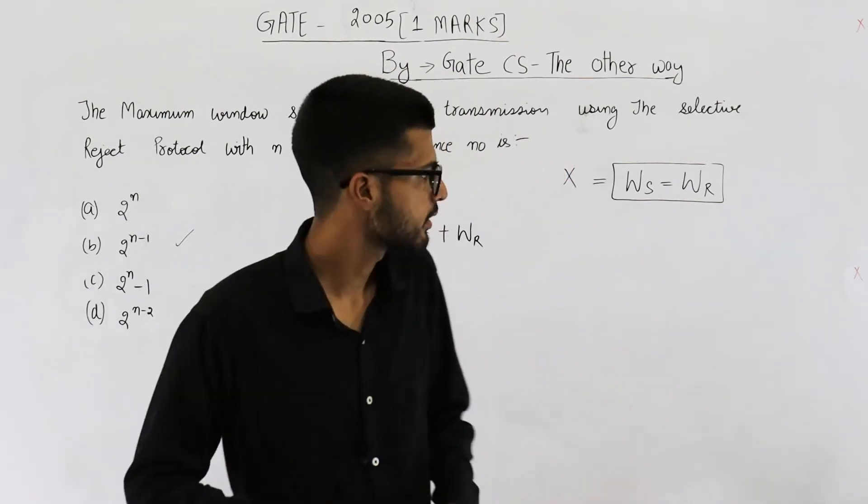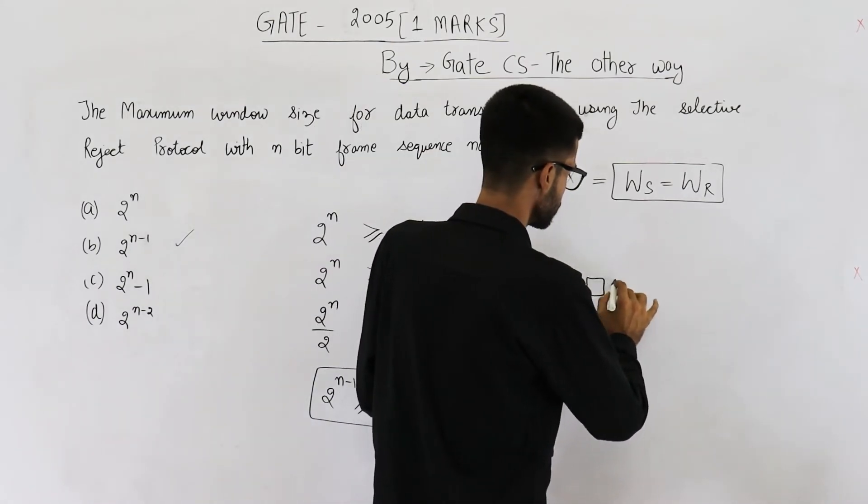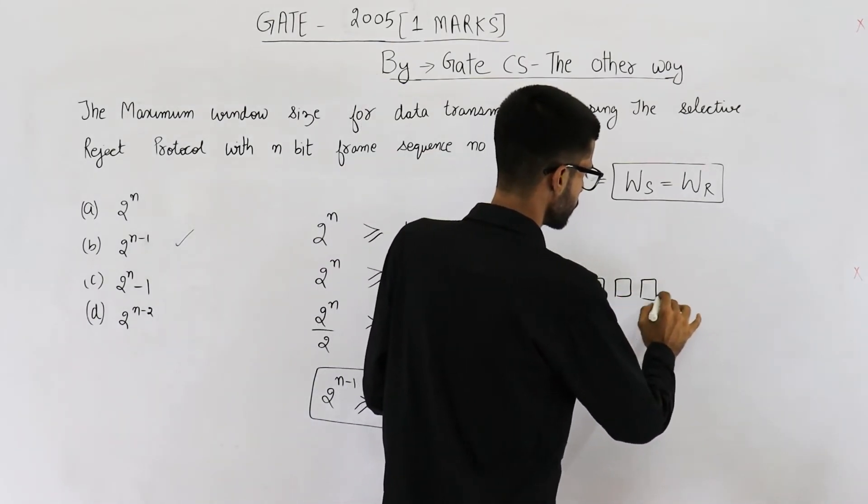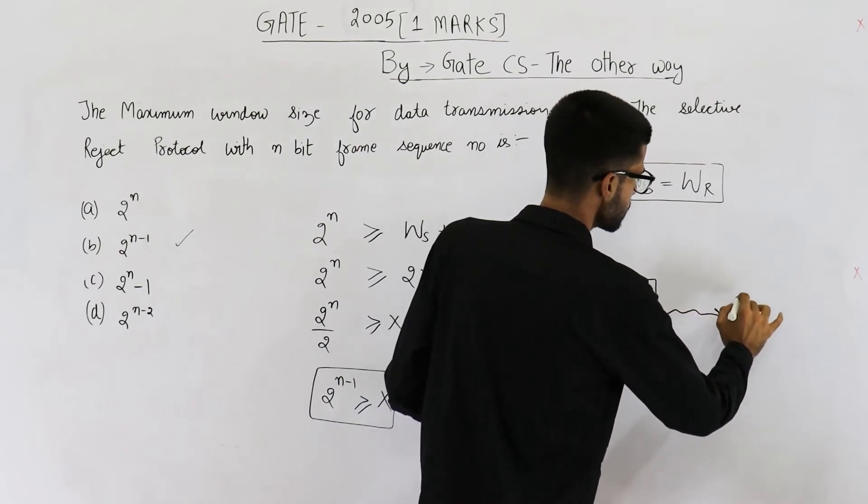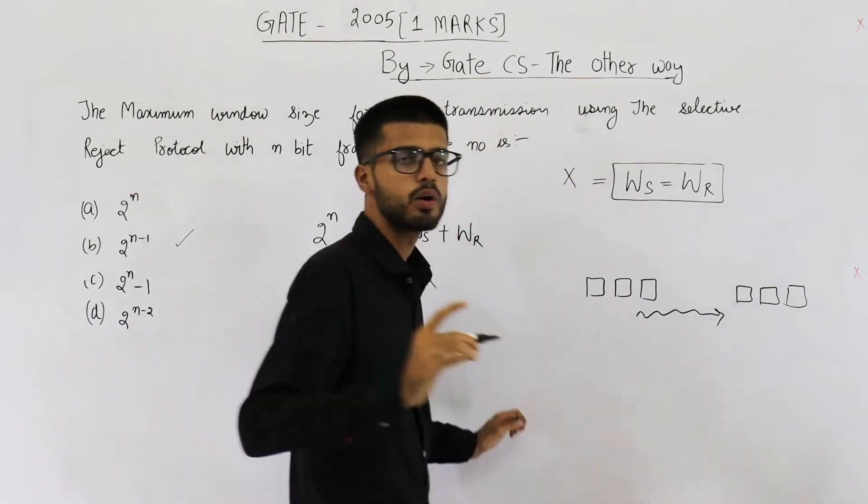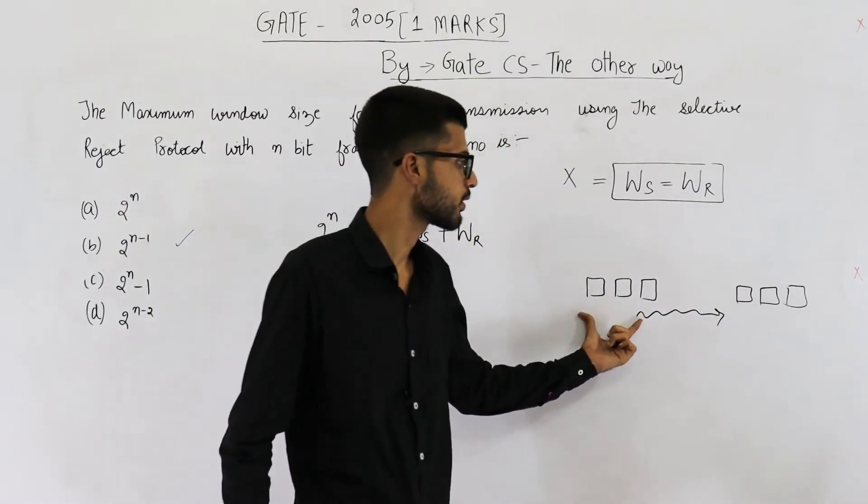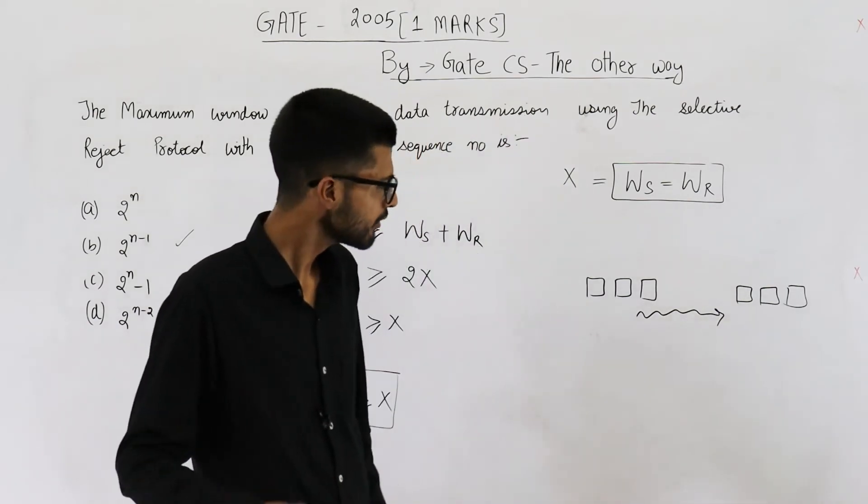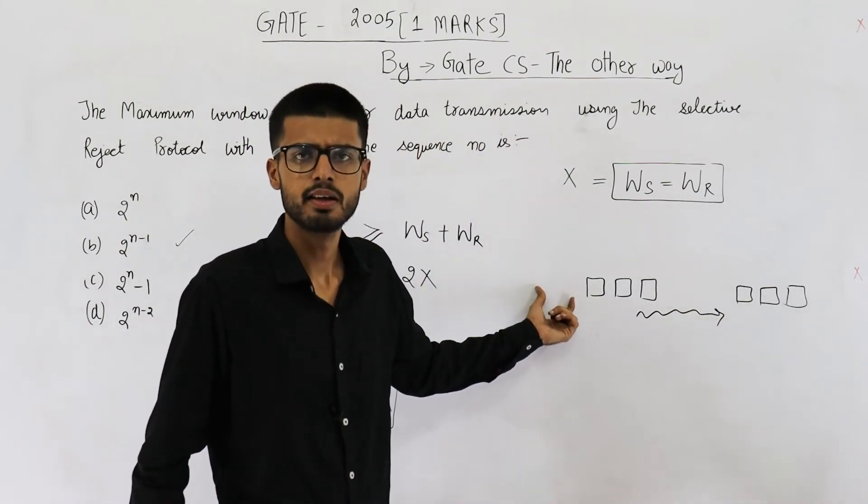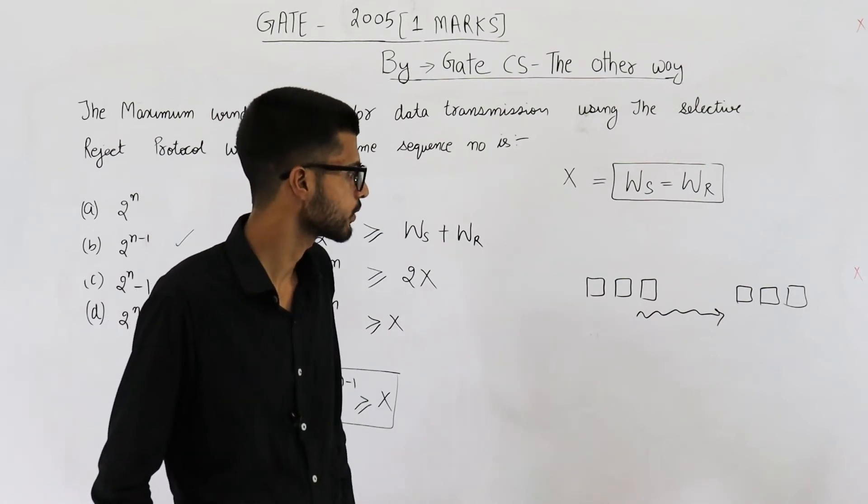Now let us take some numerical example. If sender window size is 3 and receiver window size is also 3, in this case we need minimum of 6 sequence numbers because it is 3 plus 3. Suppose sender window size is 100, receiver window size will also be 100. In that case you need 200 sequence numbers.